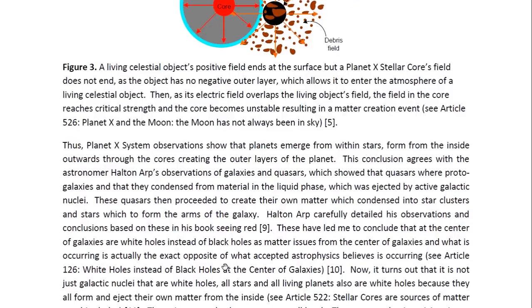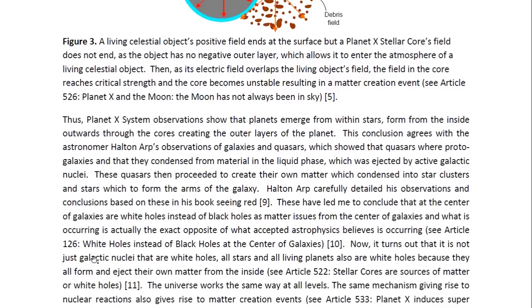Halton Arp carefully detailed these observations and conclusions based on these in his book, Seeing Red. These have led me to conclude that at the center of galaxies are white holes instead of black holes, as matter issues from the center of galaxies. And what is occurring is actually the exact opposite of what accepted astrophysics believes is occurring.